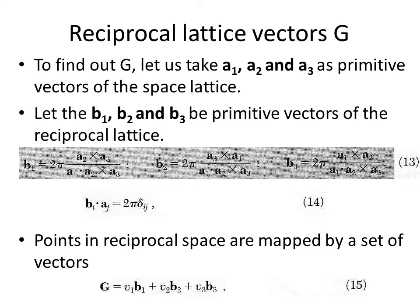We will first see the reciprocal lattice vectors and how to represent them. If a1, a2, a3 are the crystal vectors or primitive translation vectors in the space lattice, and b1, b2, b3 are the corresponding primitive lattice vectors in reciprocal space, then b1 is equal to 2π times (a2 cross a3) divided by (a1 dot a2 cross a3).